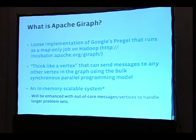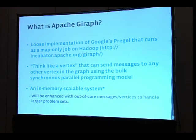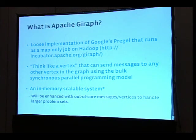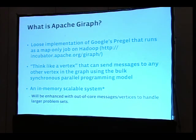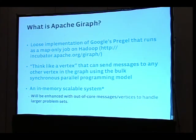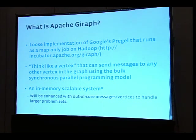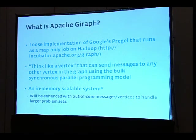Apache Giraph is basically a loose implementation of Google's Pregel. Pregel is something that was created at Google as a way of doing large-scale graph processing using the bulk synchronous parallel model, which I will talk about in a little bit. It's implemented as a map-only job in Hadoop. As mentioned, it's a big hack on top of Hadoop — we use Hadoop as nothing more than a resource allocator, we steal their maps, and then we do a lot of communication and fancy things behind the scenes. The reason it was done this way was so we could get out the door quickly and deploy quickly.